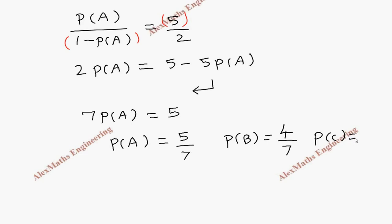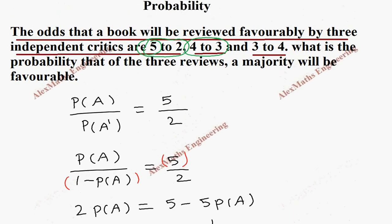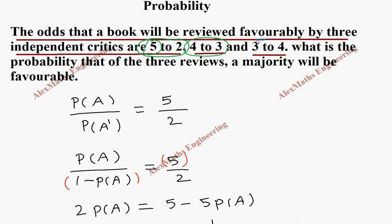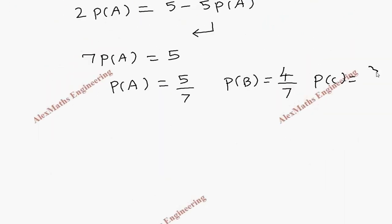In the same way, the third critic is taken as P(C). They are given 3 to 4, so we keep 3 in the numerator and sum of 3 and 4 comes in the denominator, so it is 3 by 7.